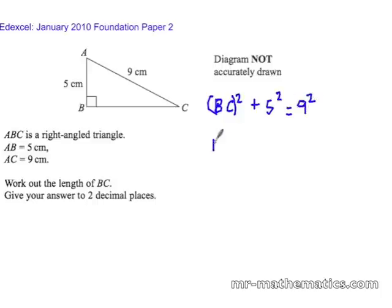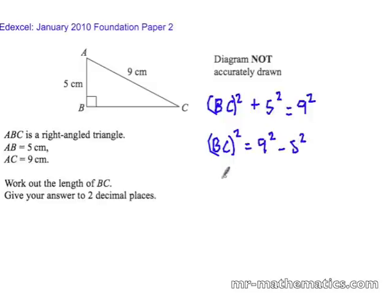We can rearrange this to make BC the subject. So BC squared equals 9 squared take away 5 squared, which gives BC squared equals 81 take away 25, which is 56. So BC is the root of 56.